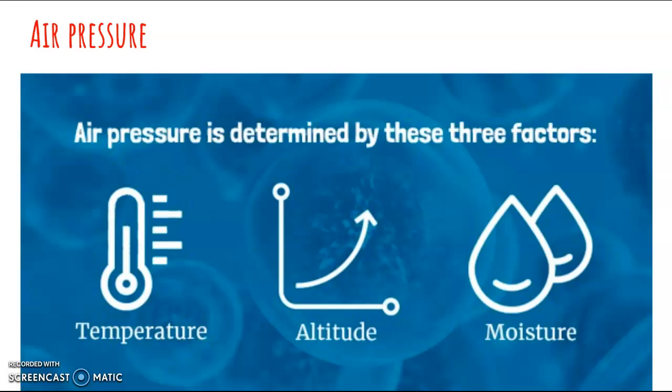Altitude: the higher you are above sea level, the less dense the air is. Less dense air weighs less, producing low air pressure, which is why it can be difficult to breathe on top of a mountain. Moisture: when the moisture in the atmosphere increases, the amount of nitrogen and oxygen decreases per unit of volume. This causes the density of the air to decrease.